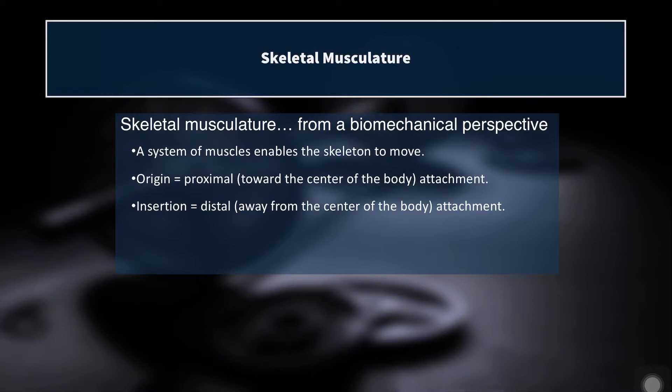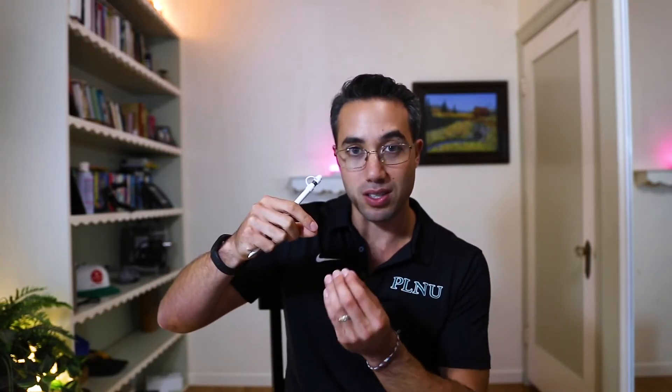Let's examine skeletal musculature and how it creates movement. We have a system of muscles that enables the skeleton to move. Each of these muscles has what's called an origin and an insertion. The origin is the proximal — toward the center of the body — attachment, and the insertion point is the distal — away from the center of the body — attachment. For instance, the hamstrings: the origin is on the ischial tuberosity, your sit bone or butt bone, and the insertion — two of them insert medially on the knee at the pes anserinus, and the other one inserts laterally on the knee. Those hamstring muscles contracting concentrically generate tension and pull either at the origin or insertion to produce movement at the hip or knee joint.